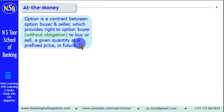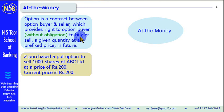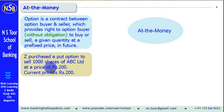What is At the Money Option? We shall see this on the basis of an example. Z purchased a put option. Put option means the option to sell. This option can be an option to buy or to sell — option to buy means call option, option to sell means put option. So Z purchased a put option to sell 1000 shares of ABC Limited at a price of Rs. 200.